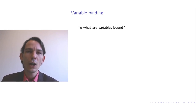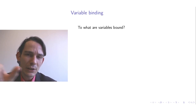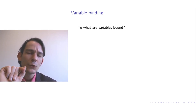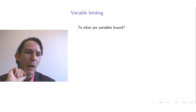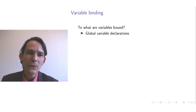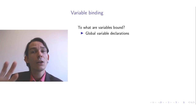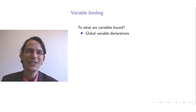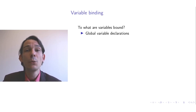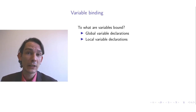If you have a variable occurrence somewhere in your program text, you might ask: to which variable is that occurrence bound? There are two kinds of variable declarations: those at the top of the program are called global variable declarations, and those within a code block are called local variable declarations.